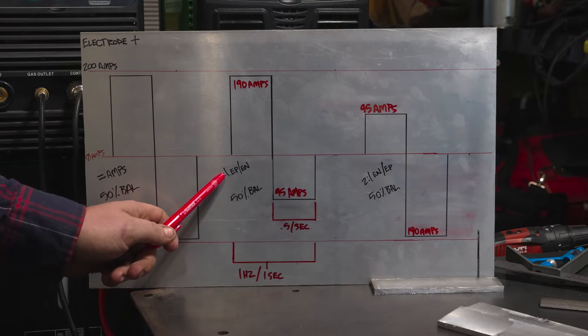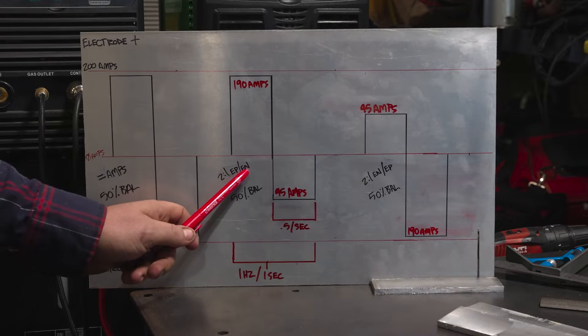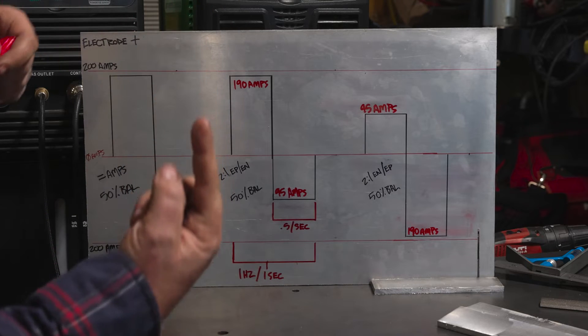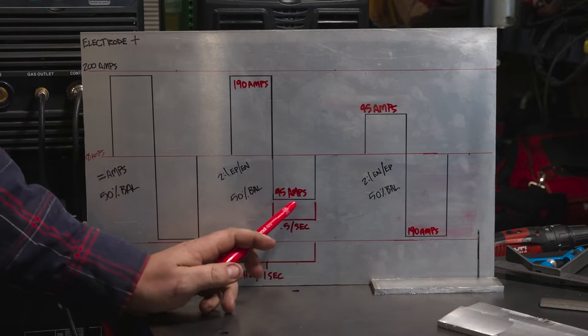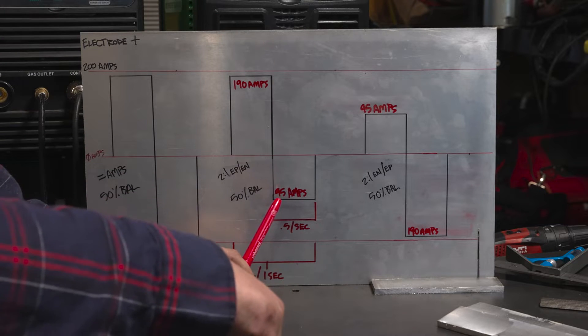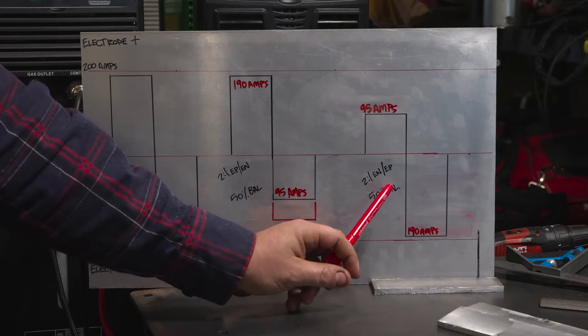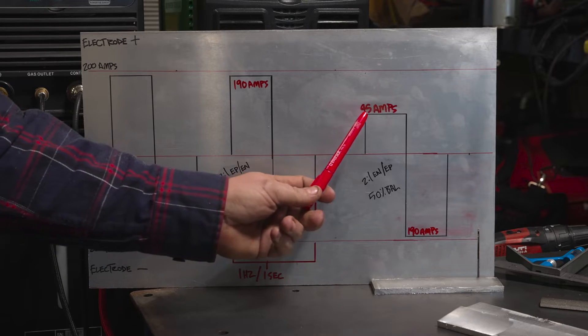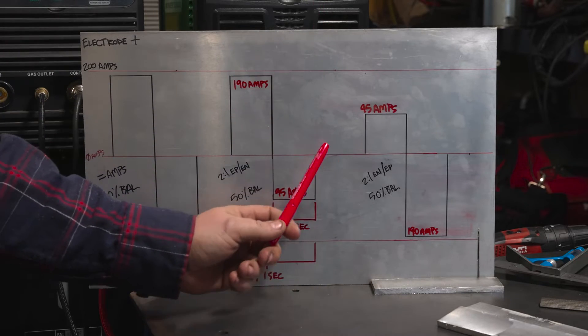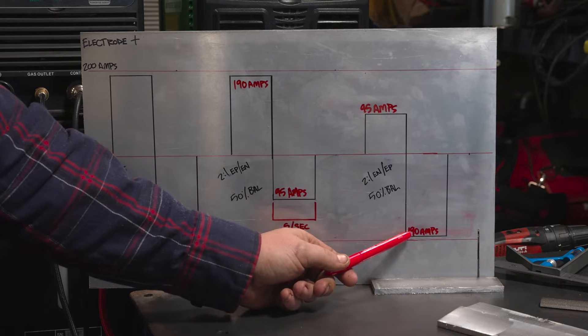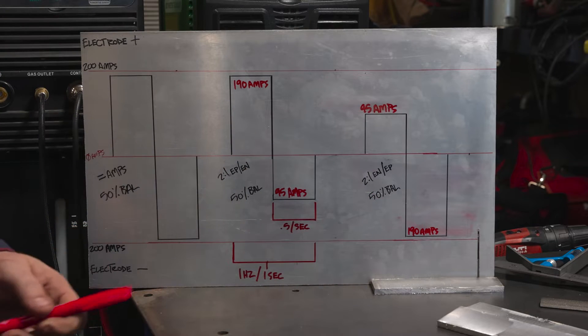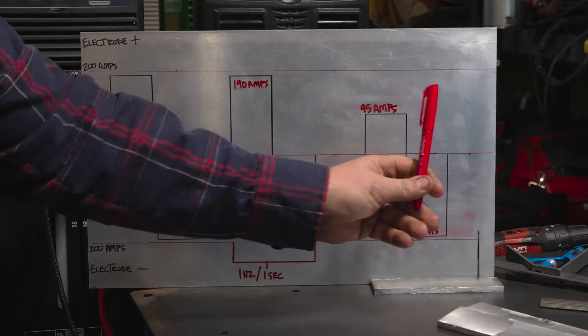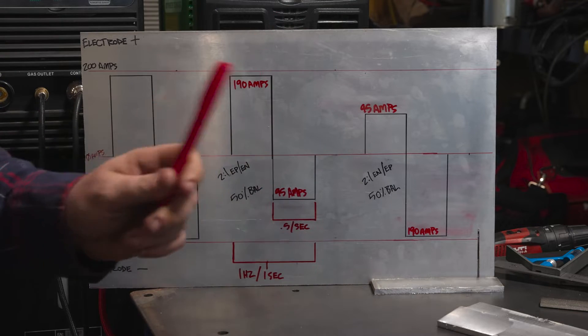But we're running a two to one amperage ratio between our EP and EN. So if we're at 190 amps electrode positive, which is our current going up to our electrode, we're only going to be running 95 amps down into our weldment. The inverse is true here, where we're still running 50% balance, a half second at each of our peaks. But instead of 190 amps going to our electrode, we only have 95 amps and we have 190 amps going into our base material. So now we've got a real simple breakdown, we're going to show you what each of these different variables does to our tungsten and to our base material.